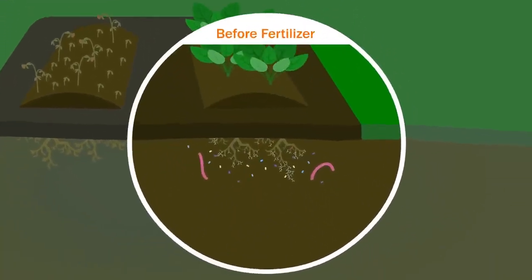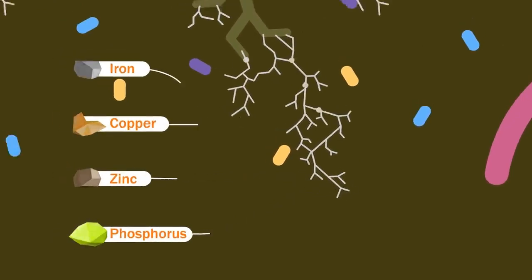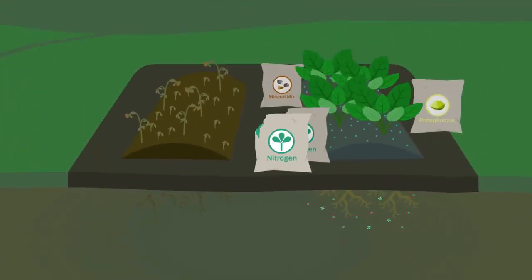And these organisms did much more than just supply nitrogen. The root fungi also brought up important minerals for the plants. And now that they're gone, mineral fertilizer must also be used.